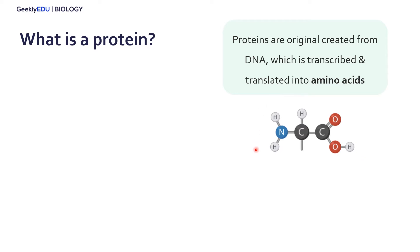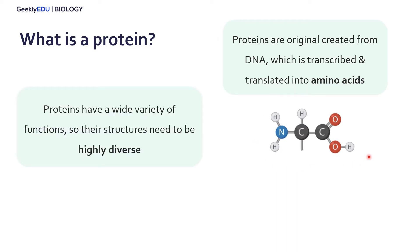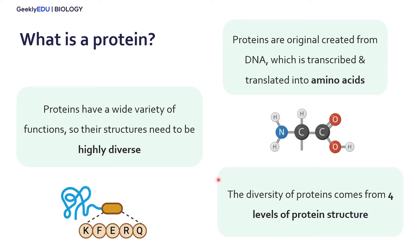Here's the basic structure of an amino acid, and these amino acids are combined to create a protein. As I just mentioned, these proteins have a wide variety of functions, so their structures have to be highly diverse to meet the highly diverse array of functions that they perform in our cells and in our bodies. The diversity of proteins comes from not only these different amino acids and their sequence, but also from four different levels of protein structure.